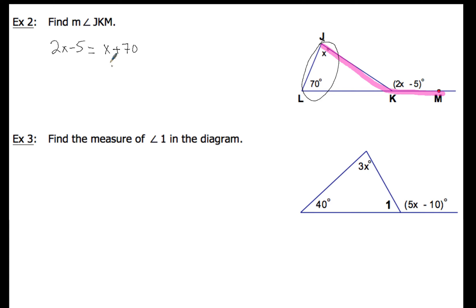Now, a bunch of different ways you can start this. We're going to go ahead and subtract x on both sides. So I'm going to have x minus 5 equals 70. And then when I add 5, I'm going to end up with x equals 75. So that is my value of x. But I am not done because it said find the measure of angle JKM. So I'm going to have to take that x and put it back in to find the value of JKM. So when we do that, measure of angle JKM is going to be 2 times 75 minus 5. 2 times 75 is 150 minus 5. So the measure of angle JKM, that is going to be 145. And then don't forget the degree symbol. So that's it for example 2.